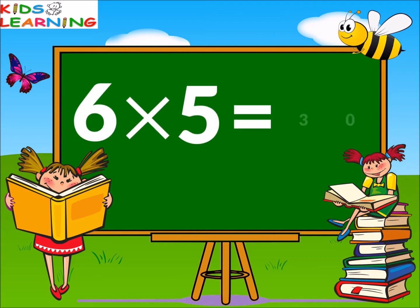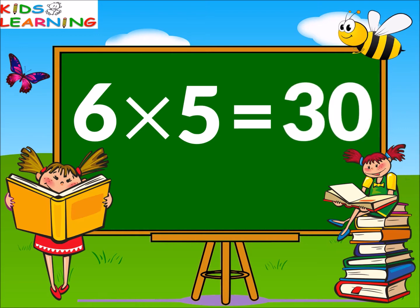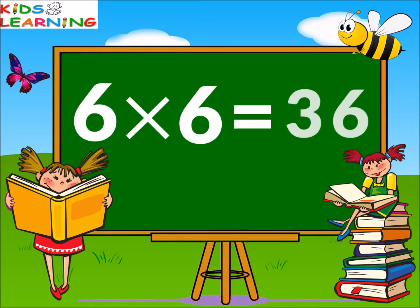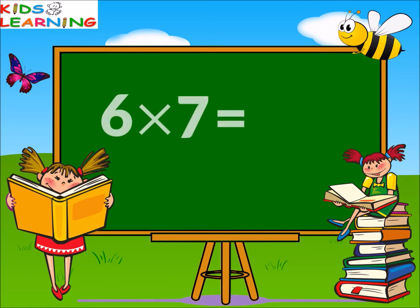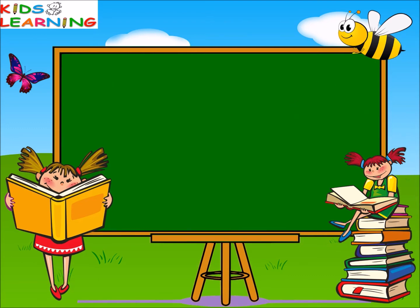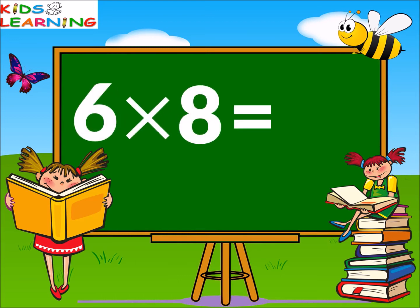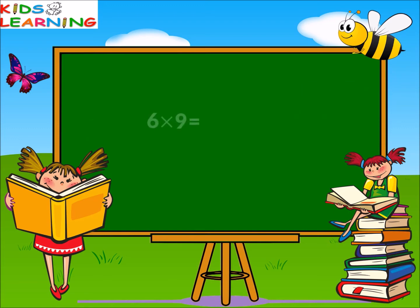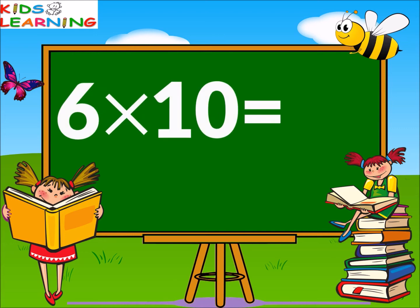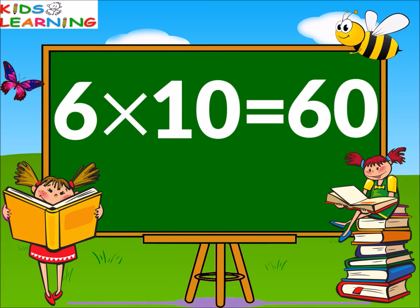Six fives are thirty. Six sixes are thirty-six. Six sevens are forty-two. Six eights are forty-eight. Six nines are fifty-four. Six tens are sixty.